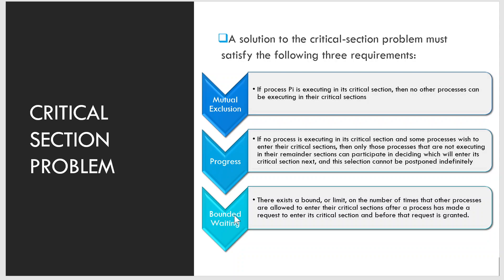The third requirement is bounded waiting. There exists a bound or limit on the number of times other processes are allowed to enter the critical section after a process has made a request to enter and before that request is granted. Every process will have a definite bounded waiting time between when it made the request and before the request is granted.